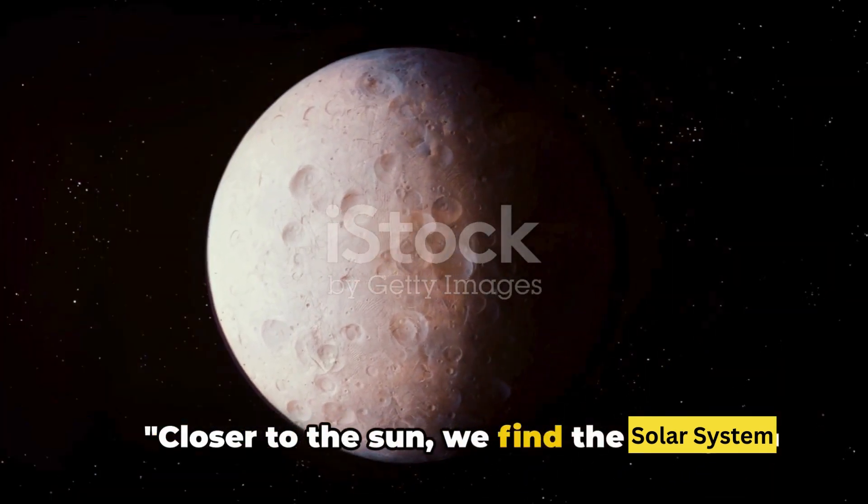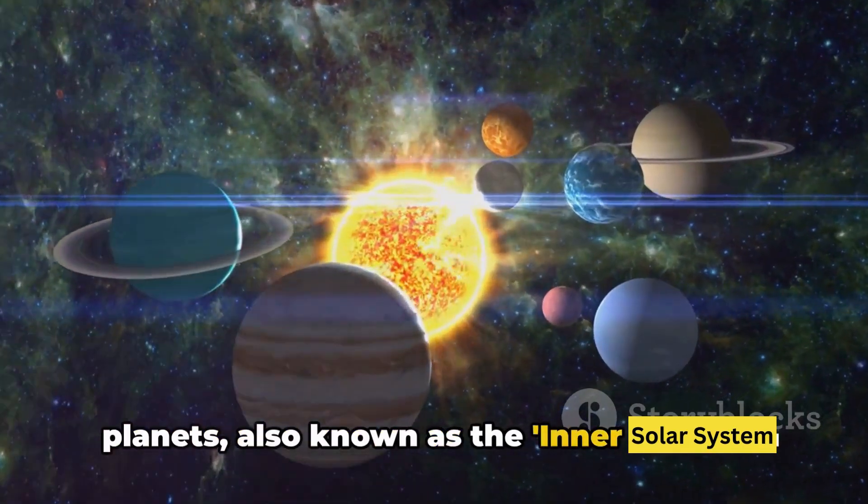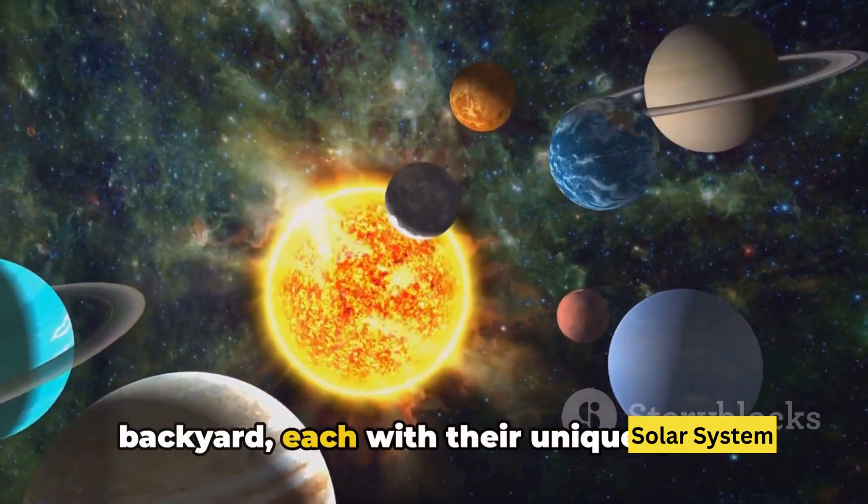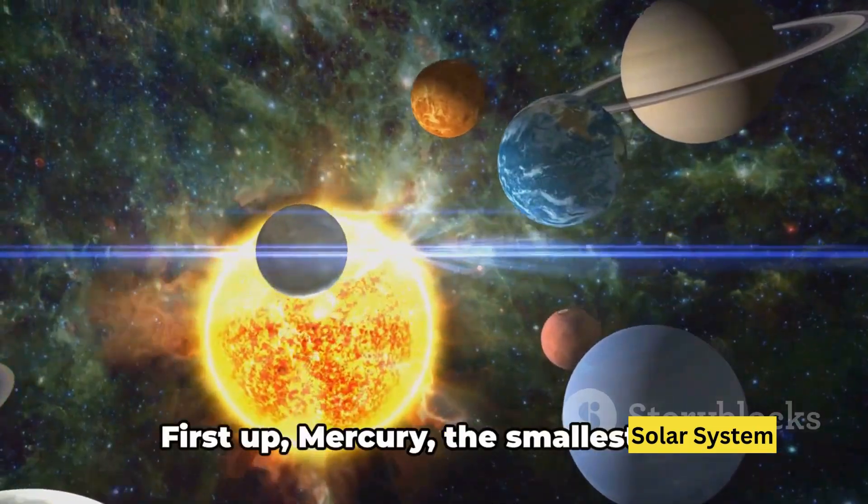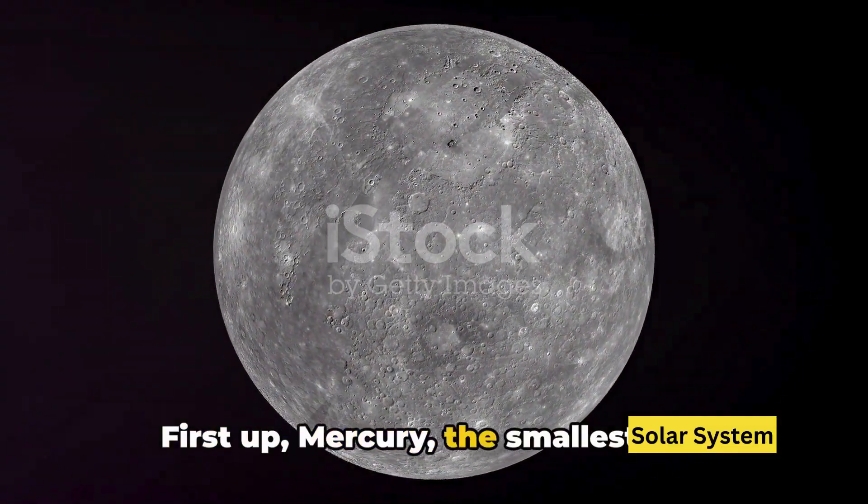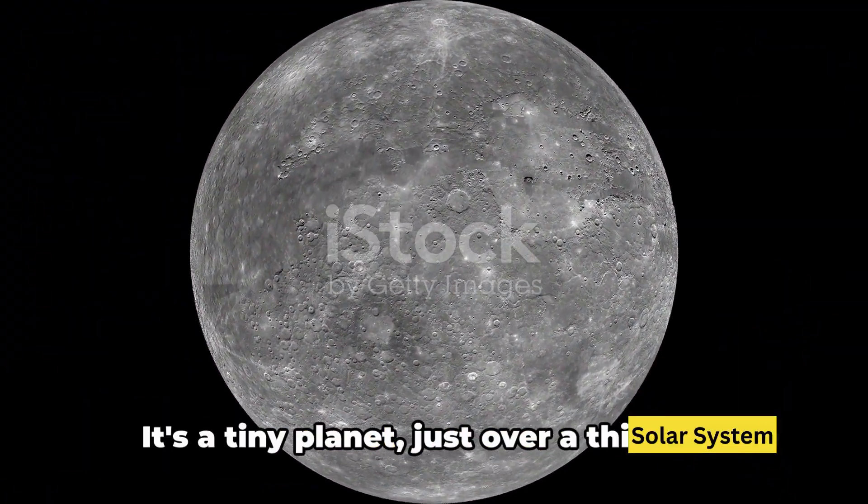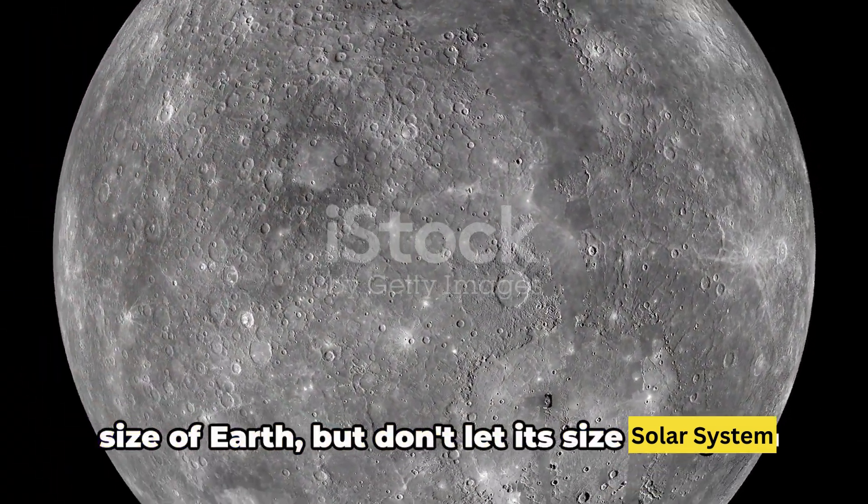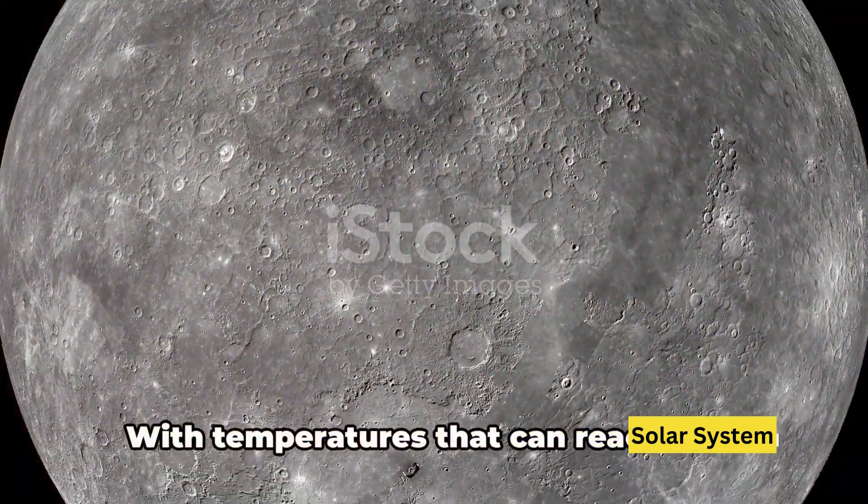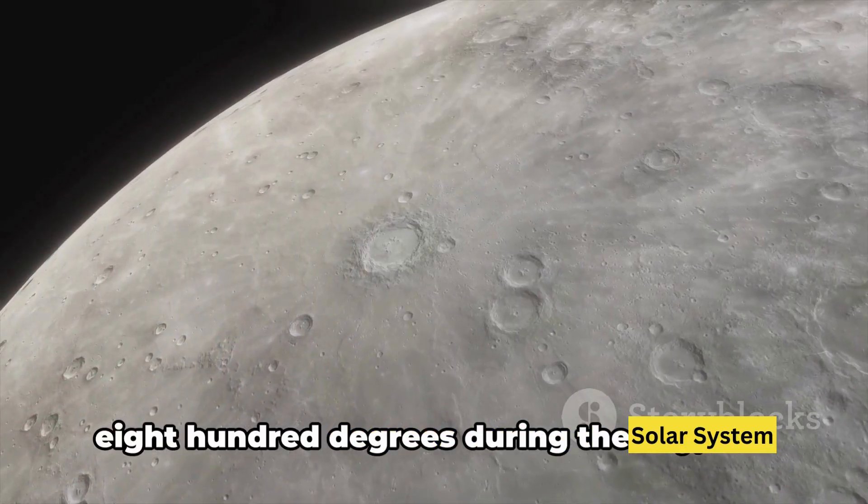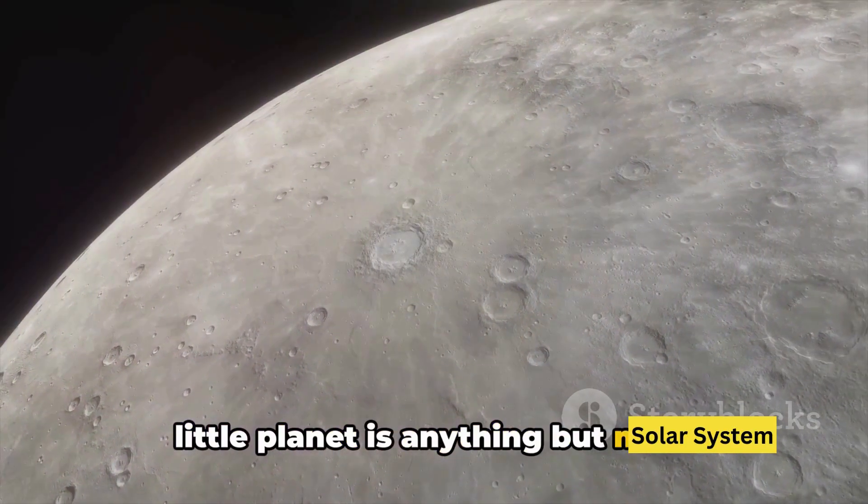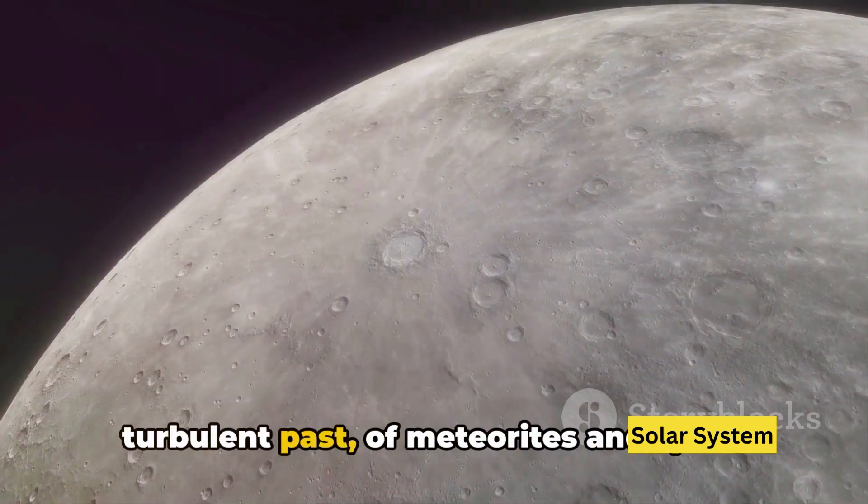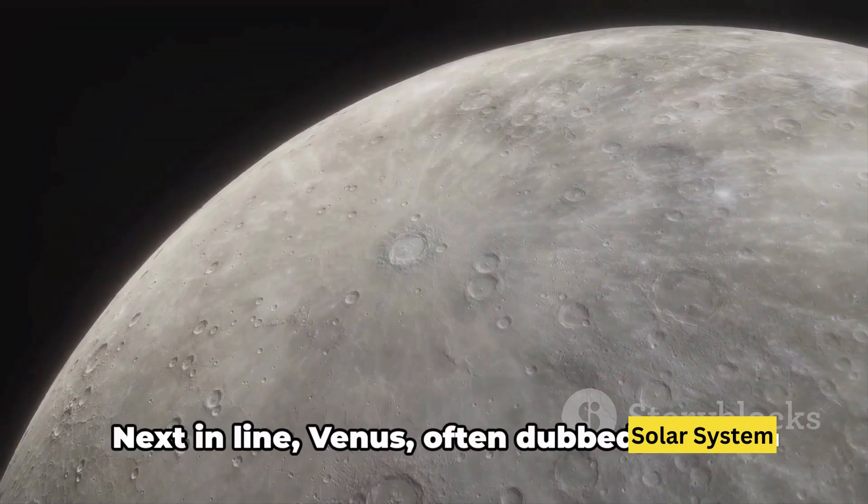Closer to the sun we find the rocky planets also known as the inner planets. Four little neighbors in our cosmic backyard, each with their unique quirks and features. First up, Mercury, the smallest and closest to the sun. It's a tiny planet just over a third the size of Earth but don't let its size fool you. With temperatures that can reach over 800 degrees during the day, this little planet is anything but mild. And its craters? They tell tales of a turbulent past, of meteorites and space rocks crashing onto its surface.